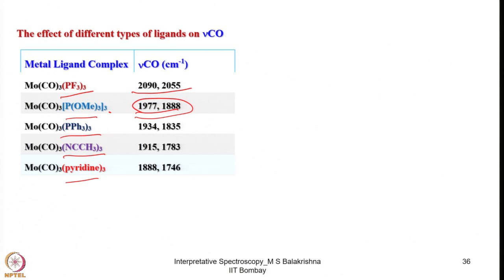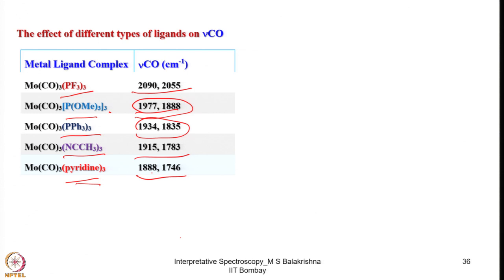Triphenylphosphine is a good sigma donor but not a very good pi acceptor, which is reflected in lower CO stretching frequencies. Acetonitrile is only a sigma donor, so all electron density from zero-valent metal goes to the remaining three CO ligands, dropping the frequency further. In the case of pyridine, it drops further still to 1746 and 1888 cm⁻¹. This gives a measure of how competing ligands influence CO stretching frequencies.